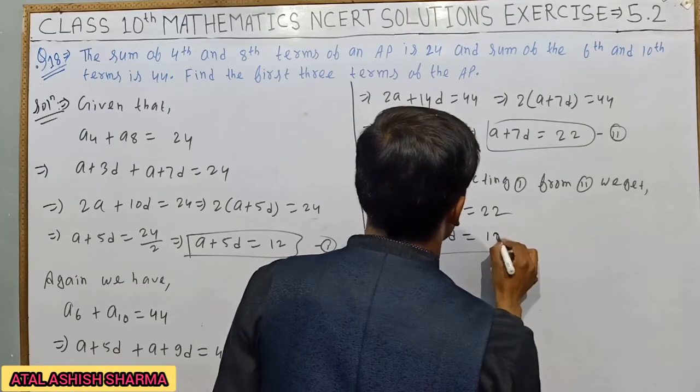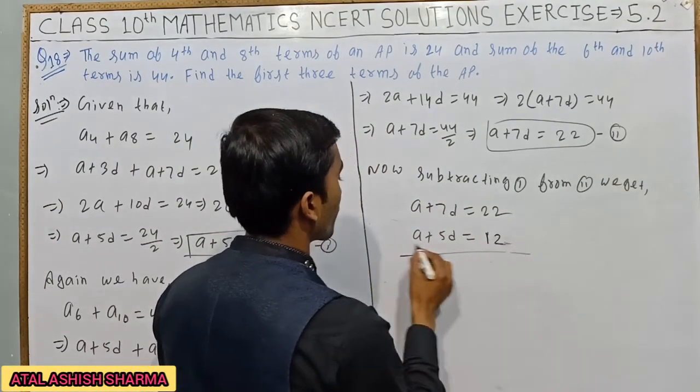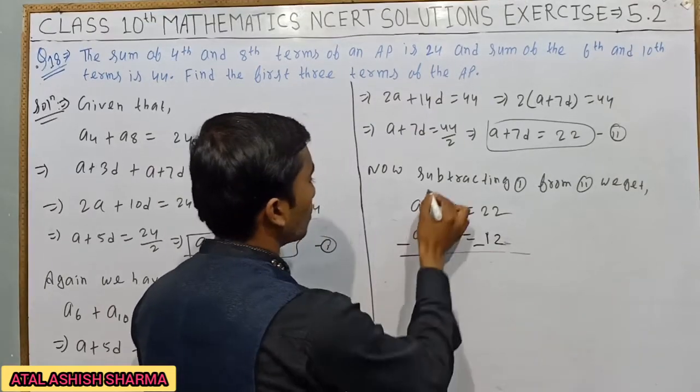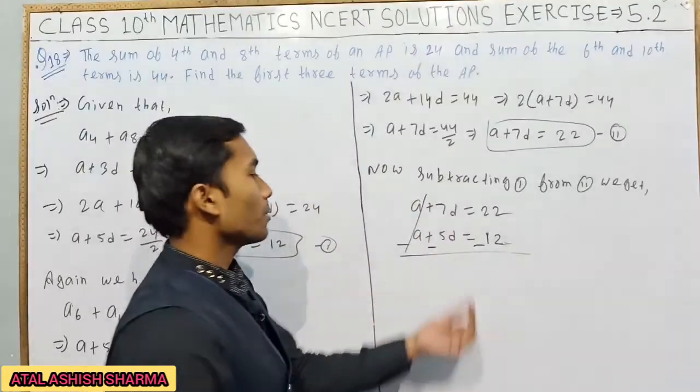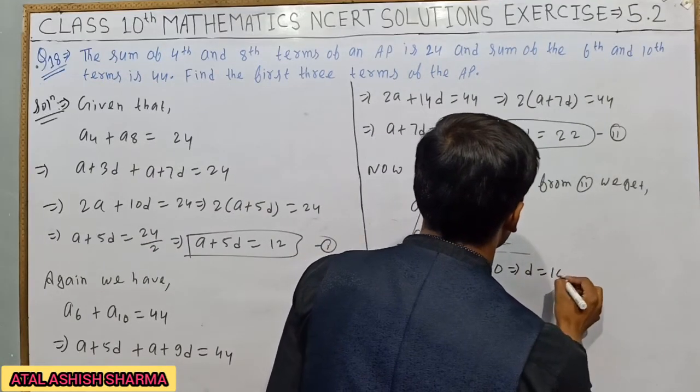a cancels, 7 minus 5 gives 2d equals 10. So d equals 5. This is the value of d.